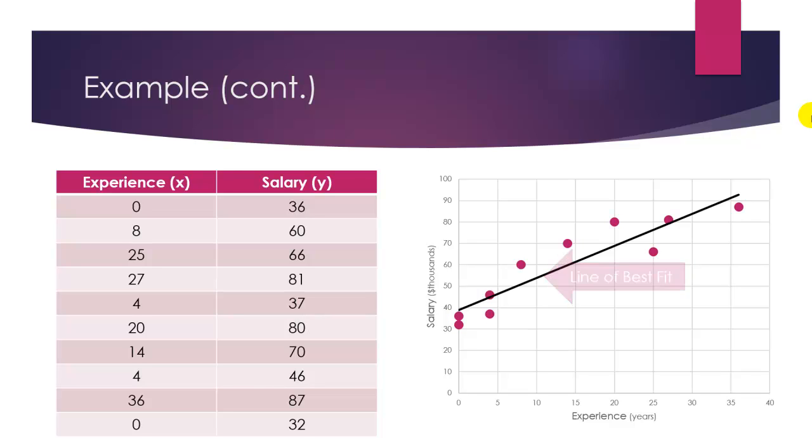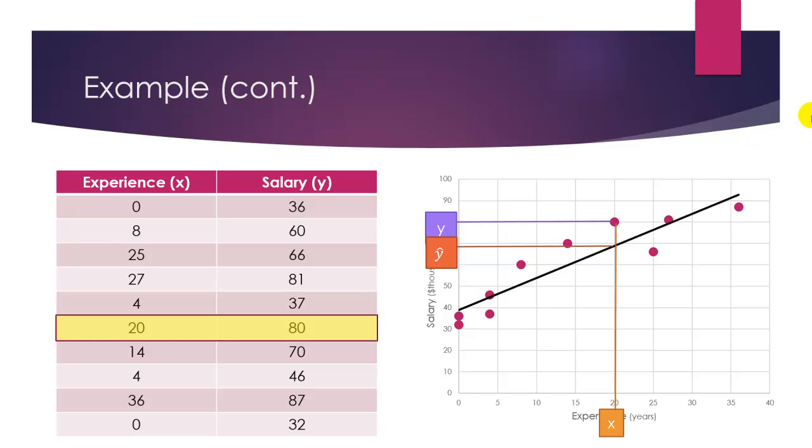If we pick a particular x value in the data set, we notice that it actually has two values of y, an actual value of y and a predicted value of y. That is, the value of y that would lie directly on the straight line at that particular value of x. The actual value of y will still call y, but the predicted value of y will call y hat instead to indicate that it is a prediction or an estimation and not an actual y value. In our example, when x is 20, y is 80, but the predicted value of y is 69. In other words, our actual value of y is 11 above the predicted value. This 11 is called an error or a residual.